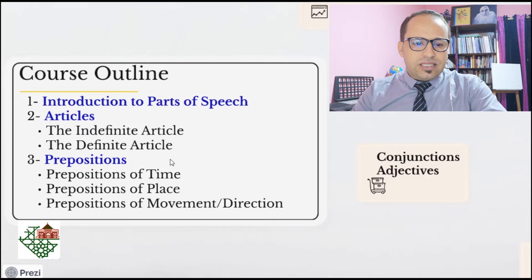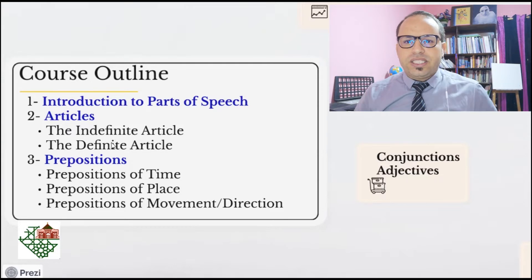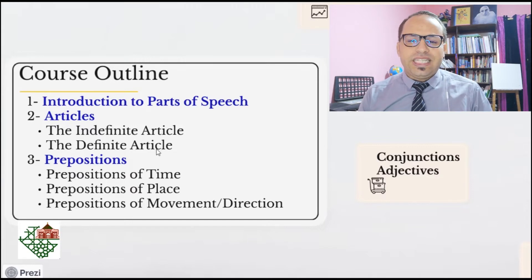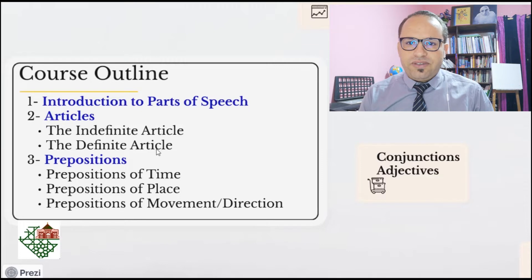Next, we'll have articles. I'm sure that you studied articles before in high school. We have two types of articles: the indefinite article A and AN, and the definite article THE. These two articles create a lot of confusion and problems for students — some students don't know when to use them and how to use them, and the cases in which we use this or that. So we'll explain that using theory and practice so that at the end we'll have a clear understanding of the use of the indefinite and the definite articles.